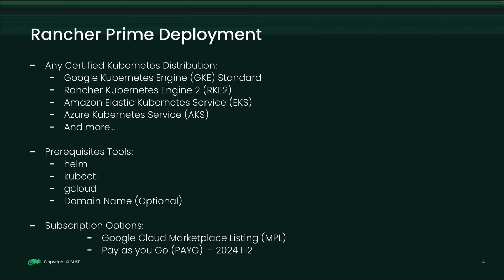Before proceeding, I must ensure that Helm, kubectl, and gcloud tools are installed on my workstation. Also, I need to have a DNS record for the Rancher Prime hostname. To explore Rancher Prime subscription options via Google Cloud Marketplace, please reach out to your dedicated SUSE sales representative. They will provide valuable guidance on the process and ensure a seamless experience.